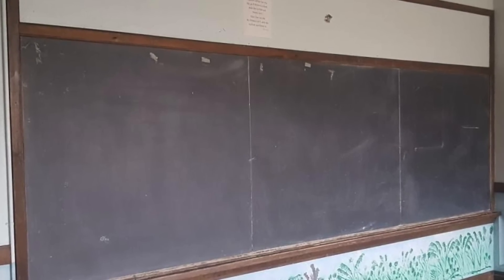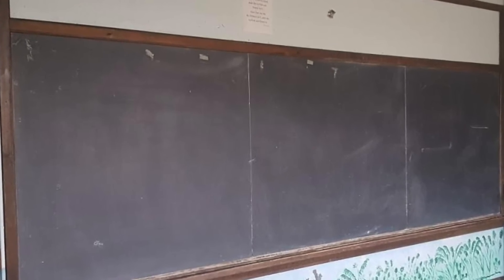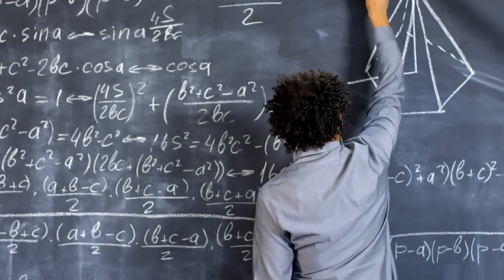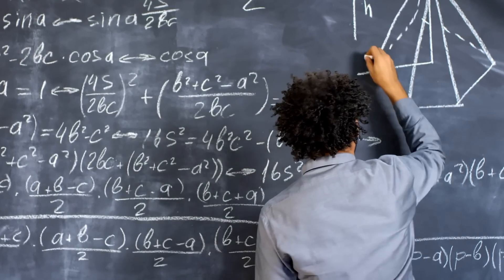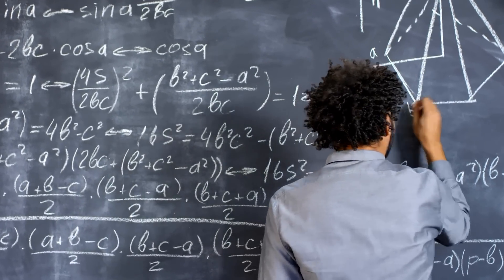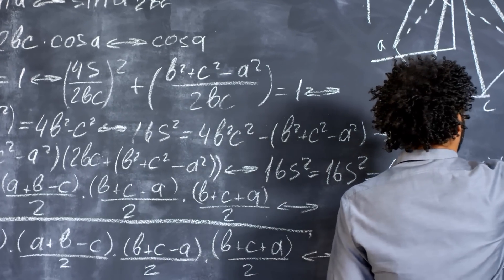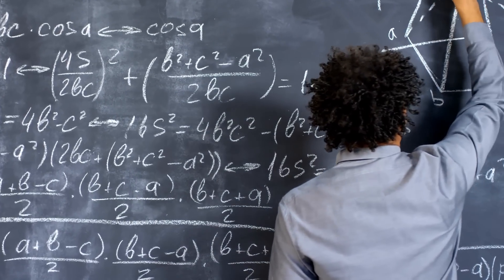Chalkboards allowed for group learning, discussions, and a more interactive teaching style. They were cost-effective, easy to maintain, and allowed for immediate feedback, which was a massive advantage in teaching. At this point, all chalkboards were black or dark gray because of the natural color of the slate used. These boards became so ingrained in school life that they became synonymous with education itself.